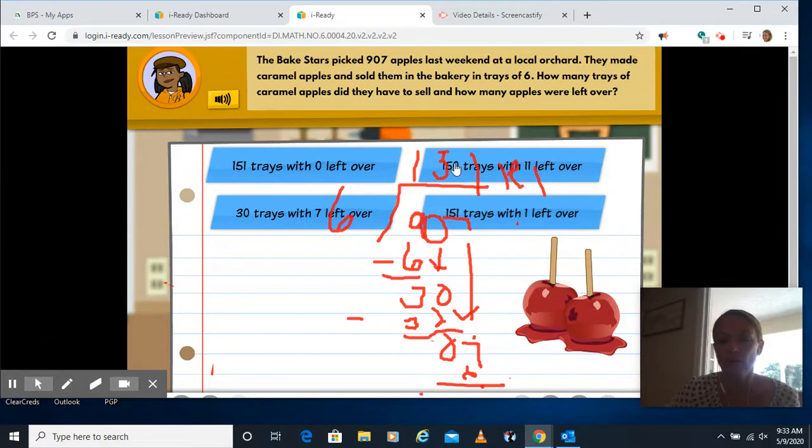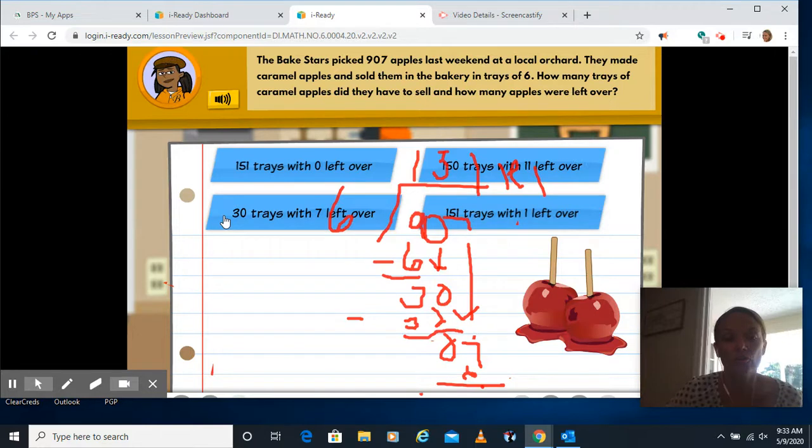So I need 151 with one left over. 151 with zero left over? Nope. We have a remainder. 150 with 11 left over? That doesn't work because six could have gone into 11. 30 trays with seven left over? Definitely not. 151 with one left over. Perfect. Click next.